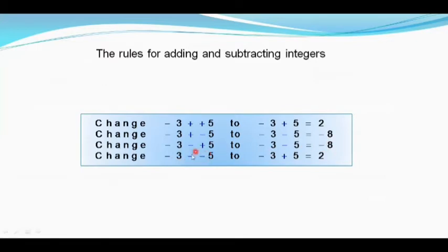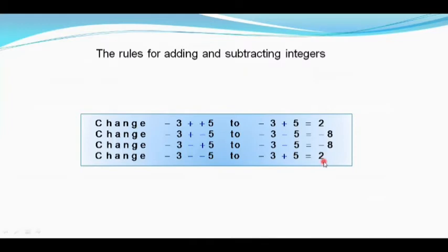For minus 3 minus of minus 5: minus into minus is plus, so minus 3 plus 5. Two different integers — one negative, one positive — we subtract and give the sign of the bigger one. 5 minus 3 is 2, and 5 is bigger, so we get a positive sign.